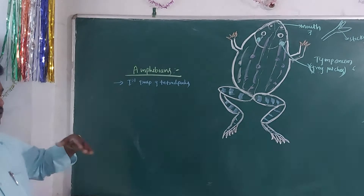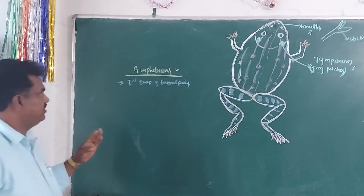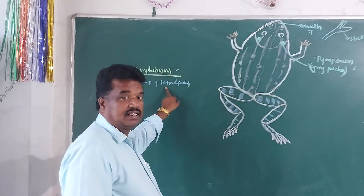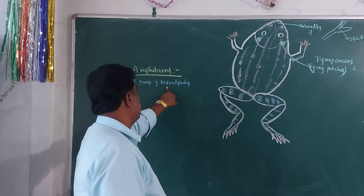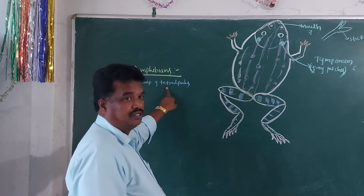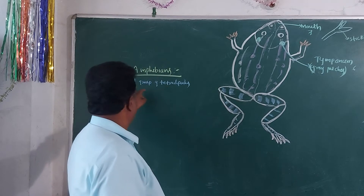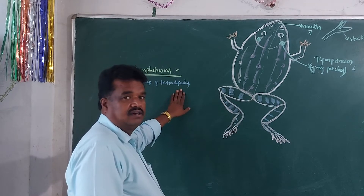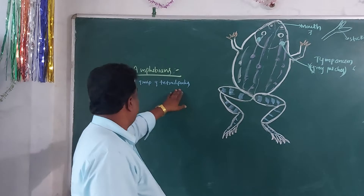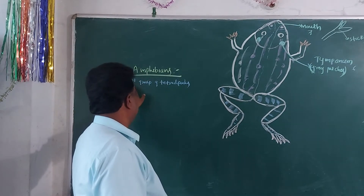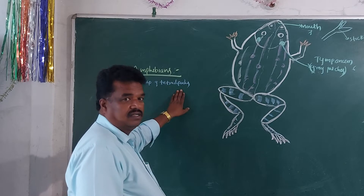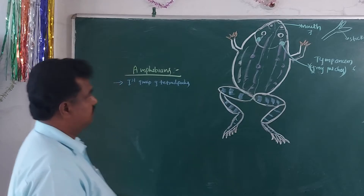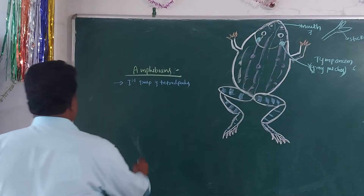Tetrapods means what? 'Tetra' means four, 'pods' means legs — so four legs. Amphibians are the first group of Tetrapods under Class Amphibia.